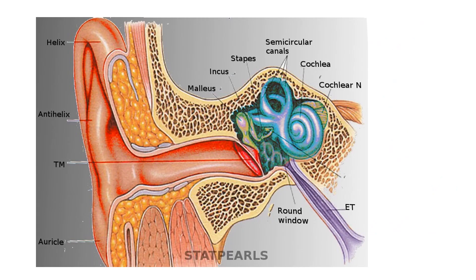Here's another diagram reviewing the structures: the tympanic membrane, the auricle — not requiring knowledge of the helix or anti-helix parts — the round window, the malleus, incus, and stapes, the semicircular canals for balance, the cochlea for hearing, the cochlear nerve branch, and the vestibular branch. The Eustachian or auditory tube is also labeled. This diagram is helpful because different tissues — bone versus soft tissue and fatty deposits — are shown in different colors.